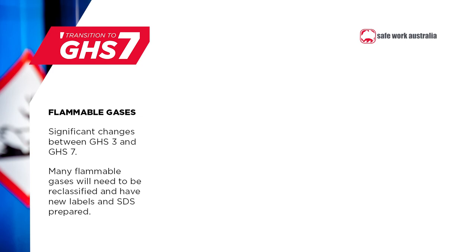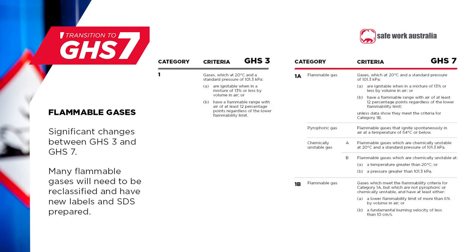Moving on to flammable gases. The classification requirements for flammable gases change significantly with the move from GHS3 to GHS7. We have a comparison of the old and new flammable gas criteria on the screen now. Under GHS3, there was only one flammable gas category used in Australia — that was Category 1. However, under GHS7, this category has been divided into two new categories: Category 1a and Category 1b. There are also new hazard categories for pyrophoric gases and chemically unstable gases.